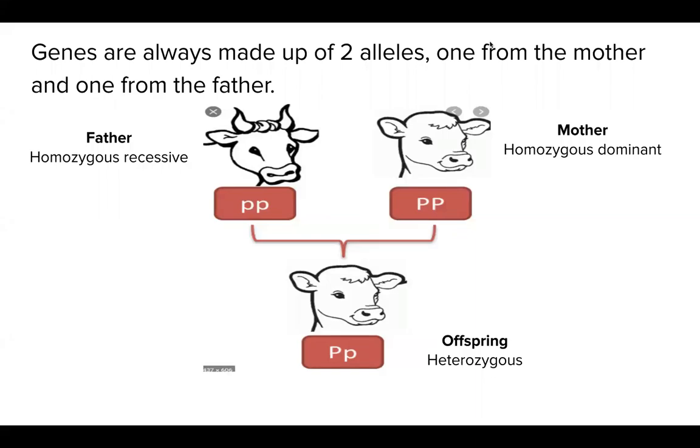We've learned that genes are always made up of two alleles, one from the mother and one from the father. We also learned how we can label these different combinations of alleles depending on whether they're both recessive, which we call homozygous recessive, if they're both dominant, which we call homozygous dominant, and if one is dominant and one is recessive, which is what we call heterozygous.